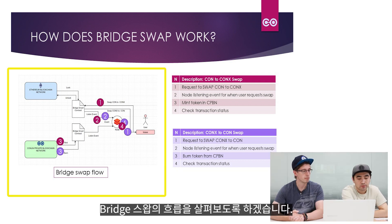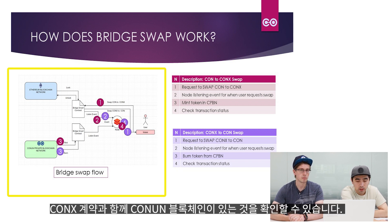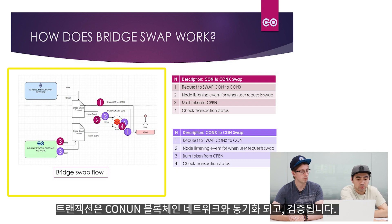Look at the bridge swap flow. We have a smart contract which runs on the Ethereum network, and we also have the Conon blockchain with the Conix. Each network runs with its own bridge contract, as you can see in the flow. Transactions will be synchronized and verified with the Conon blockchain network.